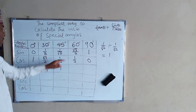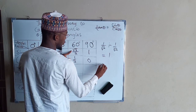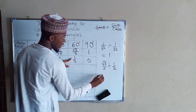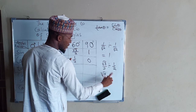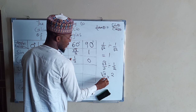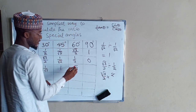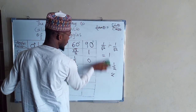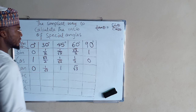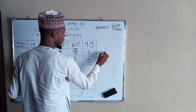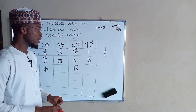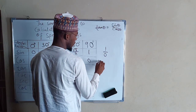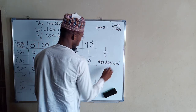For tan 60, it is root 3 over 2 divided by 1 over 2. You take the reciprocal of 1 over 2, which is 2, and the 2s cancel, leaving root 3. For tan 90 degrees, it is 1 divided by 0, and whenever you have a fraction with 0 as a denominator, it is always undefined.